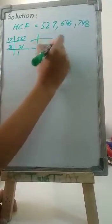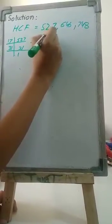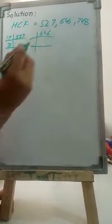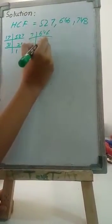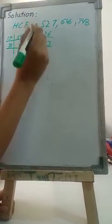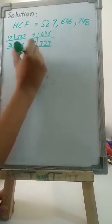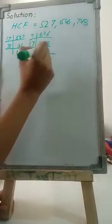We will take out the prime factorization HCF of 646. It comes in the table of 7: 646 divided by 7 equals 92.3. Then 323 divided by 17 equals 19.